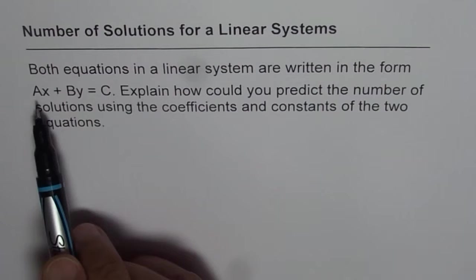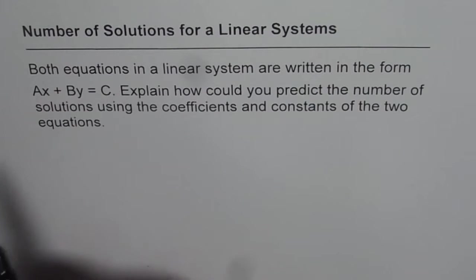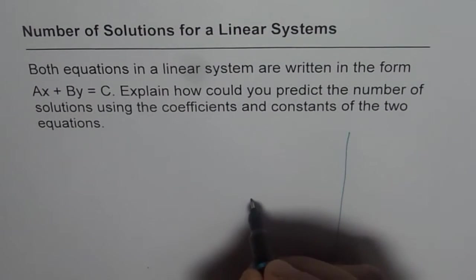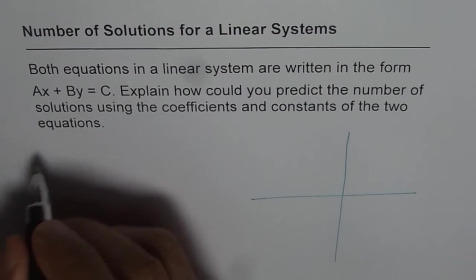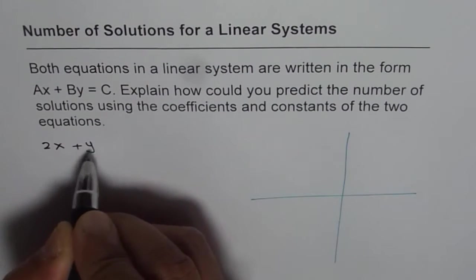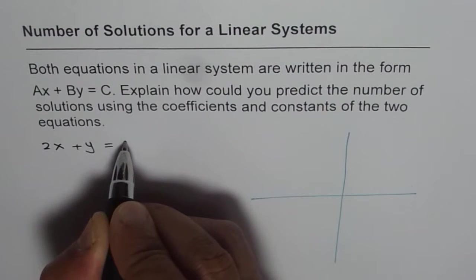So A and B are the coefficients of X and Y and C is the constant. Let's take an example to start with and we'll also graph approximately the line and then verify the solutions. So let's take a simple example.